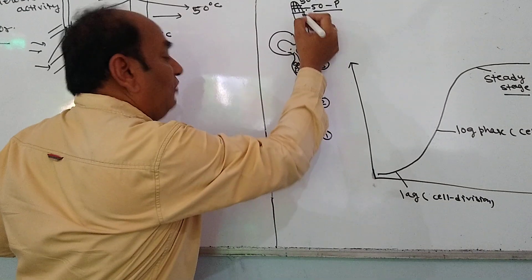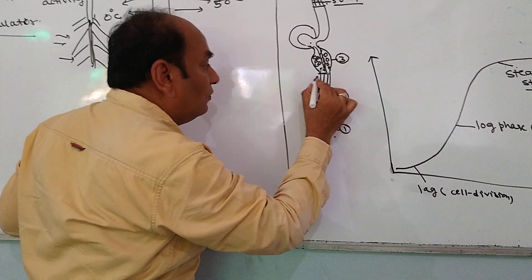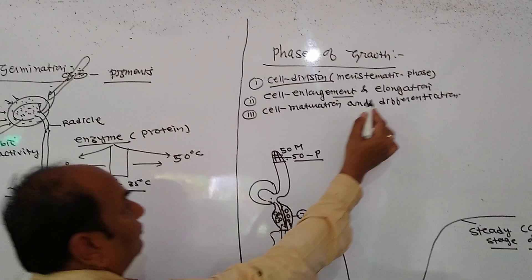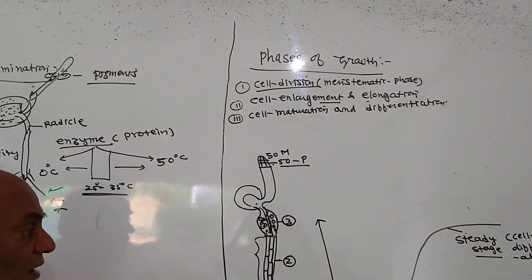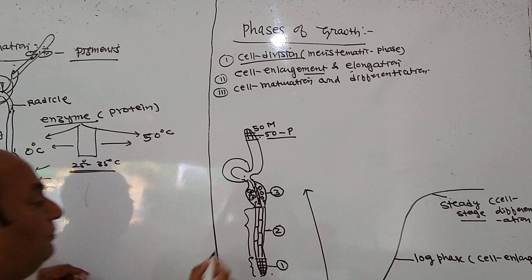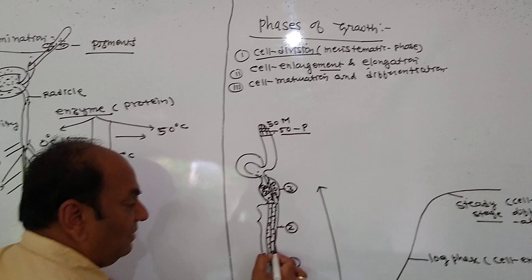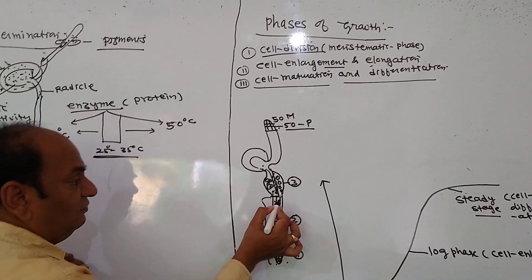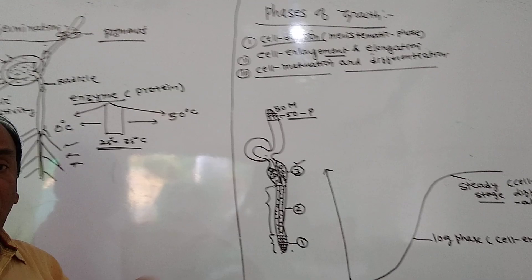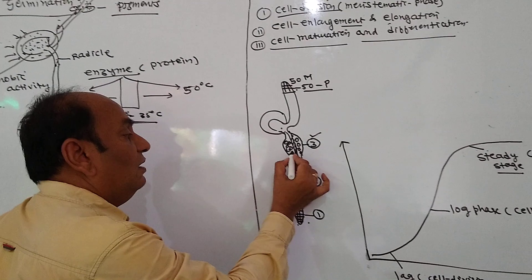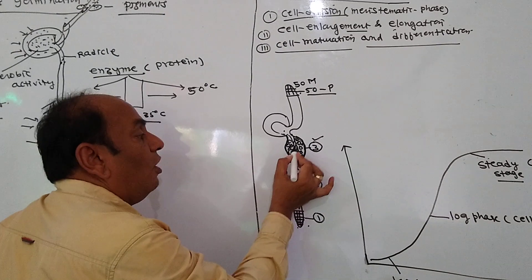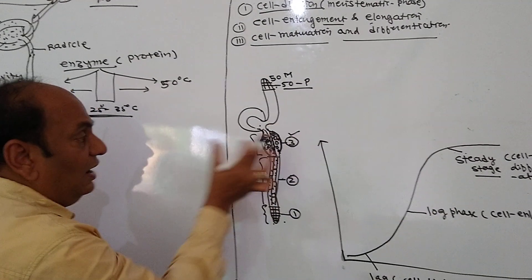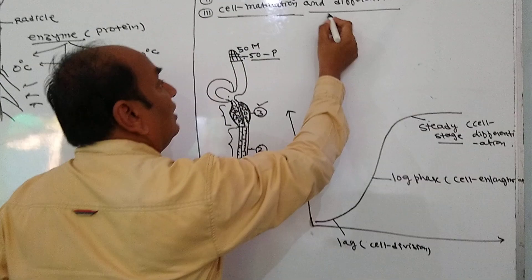The permanent cells have divided but are small in size. They absorb nutrition and elongate — the number remains the same but the size increases. That is called cell enlargement. Then the third phase is cell maturation or cell differentiation. Once cells are formed and enlarged, work distribution occurs — some cells become xylem, some become phloem, some become parenchyma. This specialization is called cell maturation or cell differentiation.